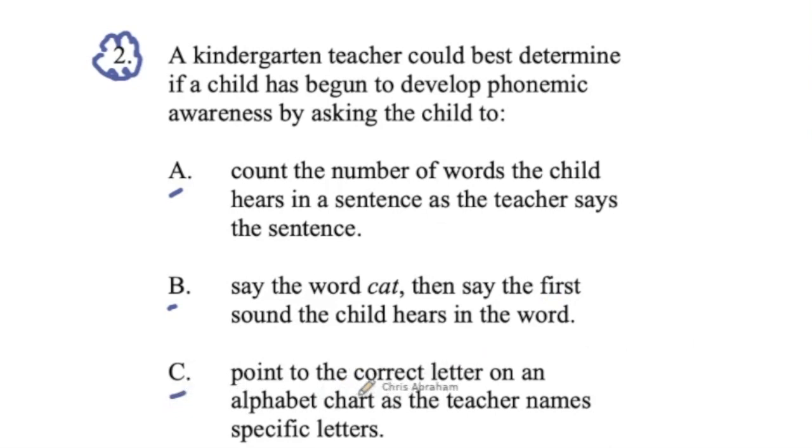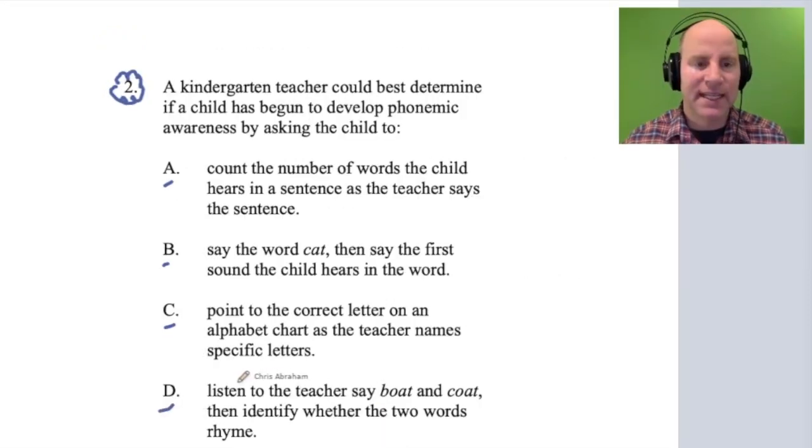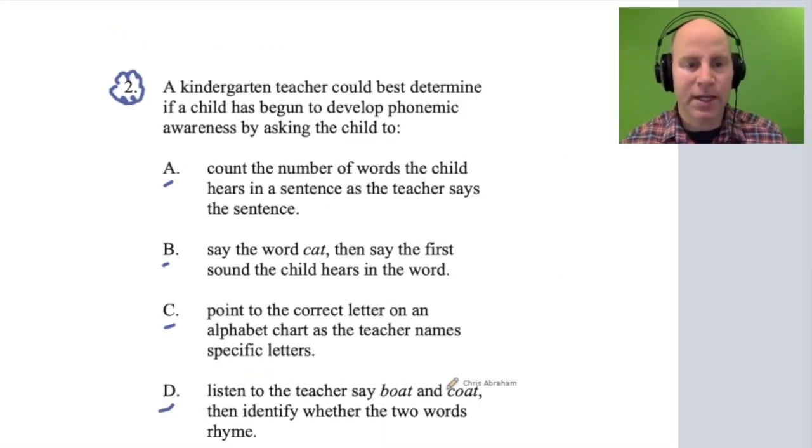C: point to the correct letter on an alphabet card as the teacher names specific letters. D: listen to the teacher say boat and coat, and then identify whether the two words rhyme.